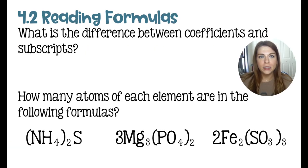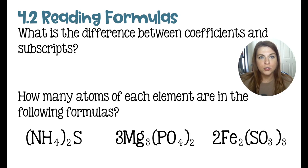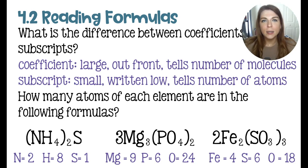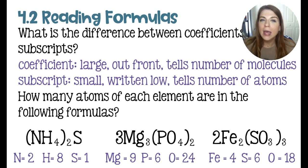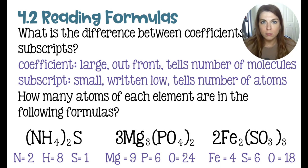Moving on to reading chemical formulas. The first question: what is the difference between a coefficient and a subscript? A coefficient is the number that goes out in front of a chemical formula and tells you the number of molecules that are present. A subscript is the tiny number written below, and that tells you the number of atoms you have of that particular element in your chemical formula.